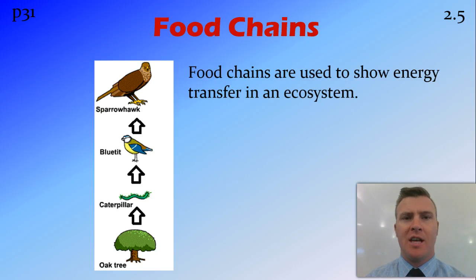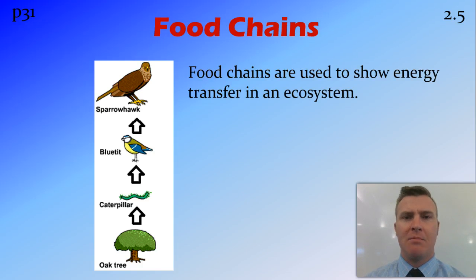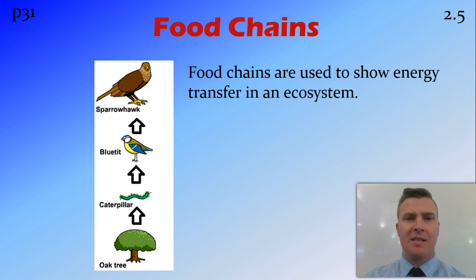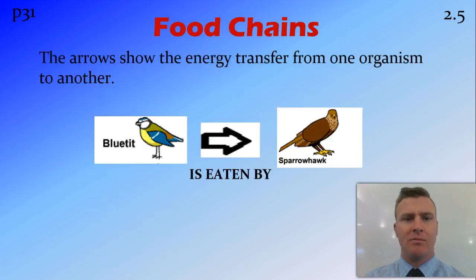One of the ways we can show this energy transfer is through a food chain. We see that we've got an oak tree, which is eaten by a caterpillar, which is eaten by the blue tit, and the blue tit is eaten by the sparrowhawk. A food chain is a single line showing transfer of energy within an ecosystem.